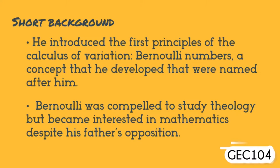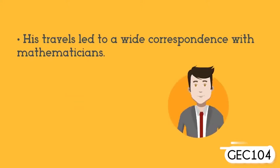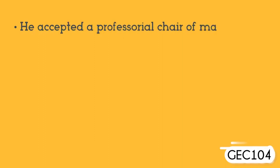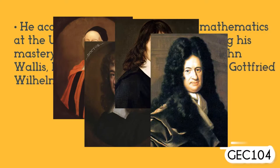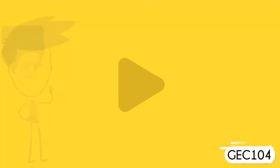Jacob Bernoulli was compelled to study theology but became interested in mathematics despite his father's opposition. His travels led to wide correspondence with mathematicians. He accepted a professorial chair of mathematics at the University of Basel in 1687, following his mastery of the mathematical works of John Wallis, Isaac Barrow, René Descartes, and Gottfried Wilhelm Leibniz, who first drew his attention to calculus.